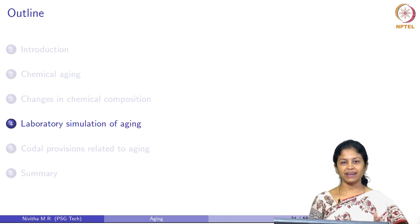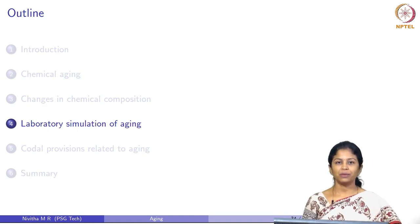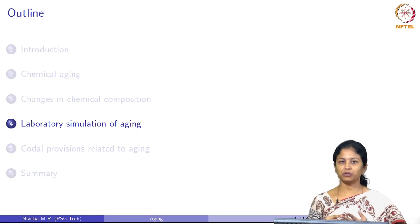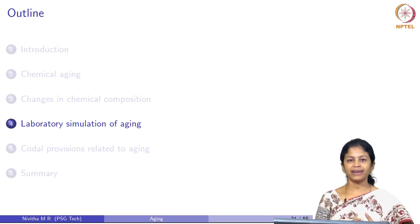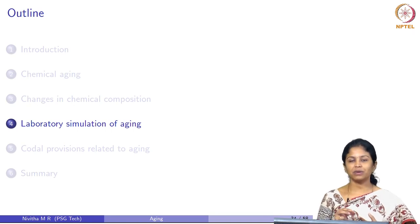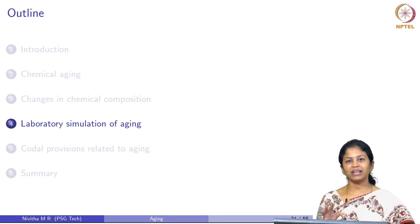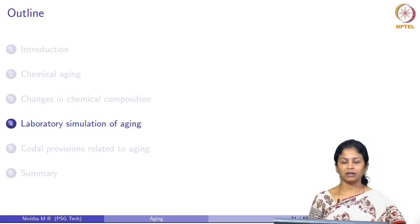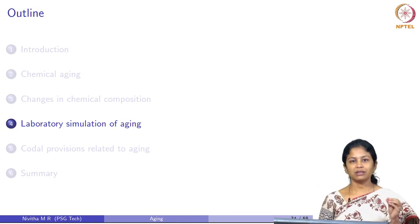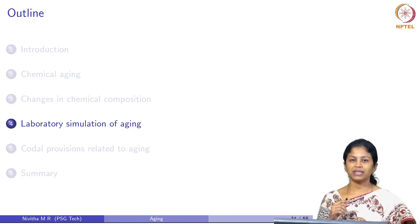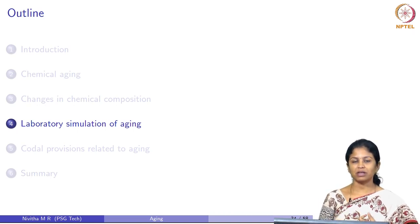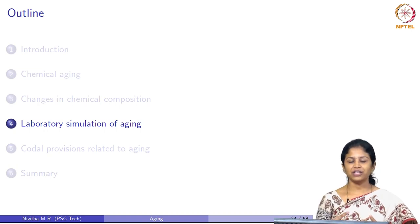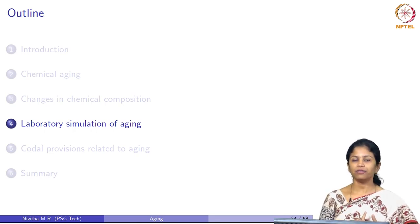In today's class we will continue the second half of the aging topic. In the previous class we defined what aging is, and we saw two types of hardening: reversible hardening and irreversible hardening. Irreversible hardening is generally defined as aging or chemical aging. It occurs in two stages: short-term aging and long-term aging. We also discussed changes in chemical composition in bitumen during aging, noting that the formation of carbonyl and sulfoxide compounds are the predominant reasons, influenced by temperature and availability of oxygen.